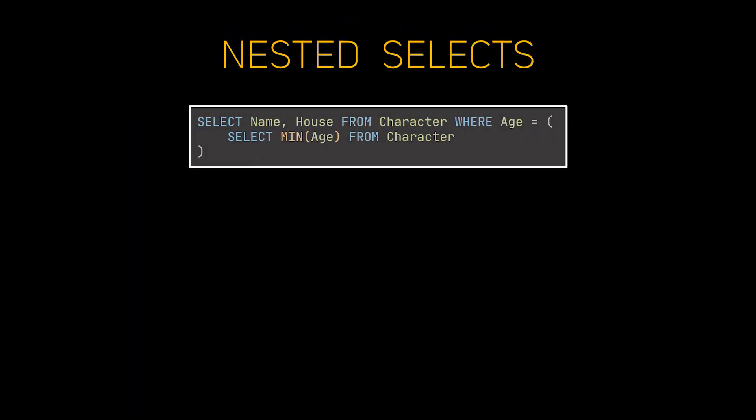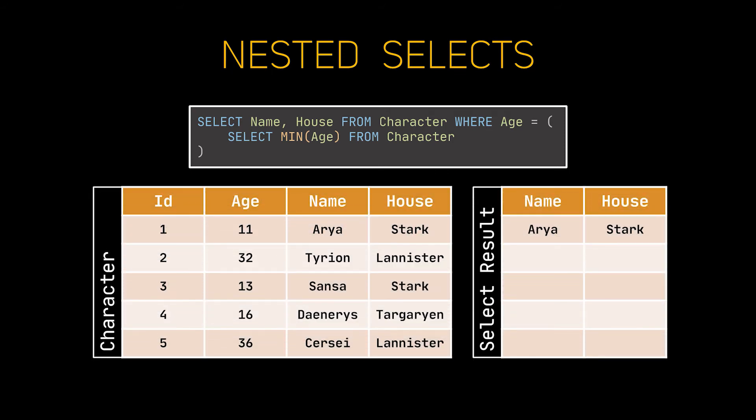SELECT clauses can be nested. What I mean by that is we can have two SELECT statements in the same query, like this one right here. In such cases, the inner SELECT statement is executed first, and the results of this SELECT will be used by the outer one. In our case, we will first retrieve the smallest age available in the whole table, and then get all the characters that have an age equal to this one. In our case, we just have one record meeting this criterion, but we could have had more than just one row.